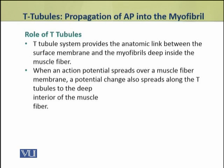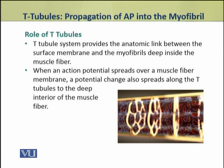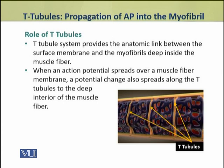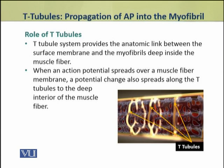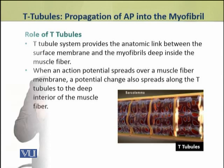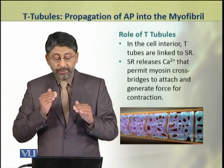When an action potential spreads along the muscle fibre membrane, it also spreads along the T-tubules, which are present in the deeper parts of the muscle. In this way, the action potential reaches the deeper parts of the muscle because of the presence of these T-tubules.